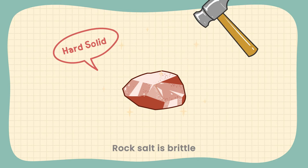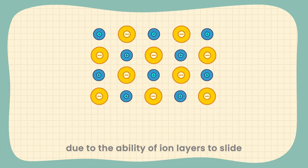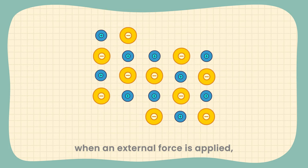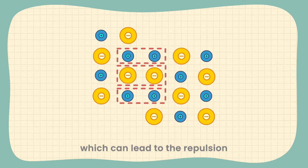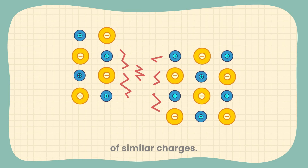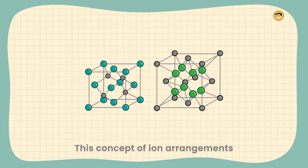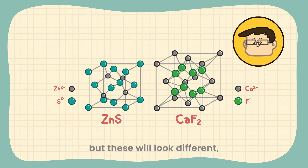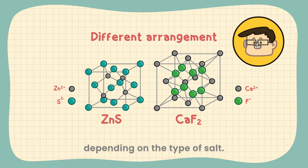Rock salt is brittle due to the ability of ion layers to slide when an external force is applied, which can lead to the repulsion of similar charges. This concept of ion arrangements will occur in other ionic salts as well, but they will look different depending on the type of salt.